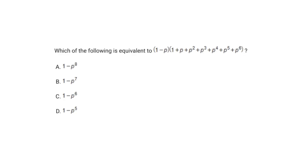The first problem is going to deal with equivalent expressions. It says: which of the following is equivalent to 1 minus p, times 1 plus p plus p squared? You can multiply everything out, but that's going to take way too much time when you're low on time on the SAT, so you have to recognize patterns.